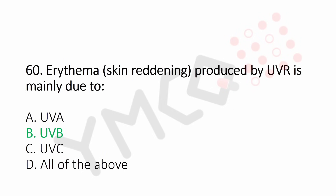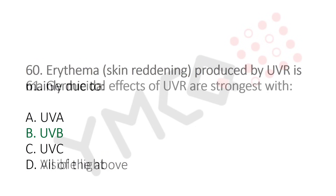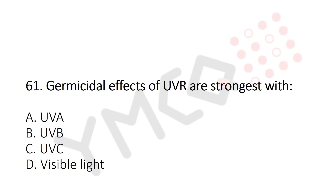Now let's move to question number 61. Germicidal effects of UVR are strongest with: Option A, UVA. Option B, UVB. Option C, UVC. Option D, visible light. And the answer is Option C, UVC.